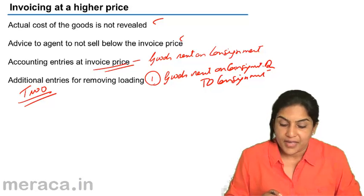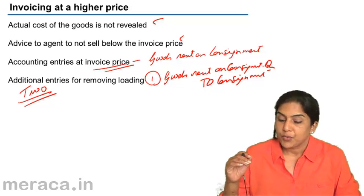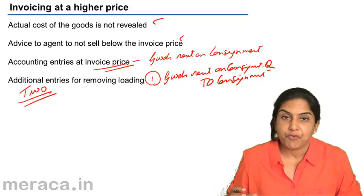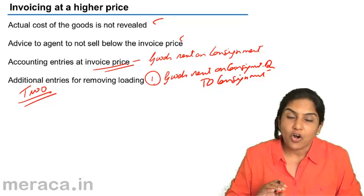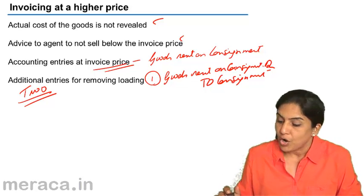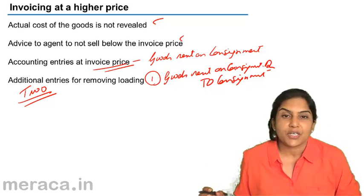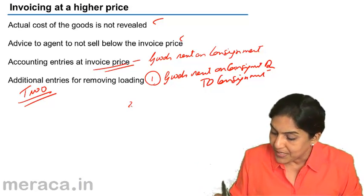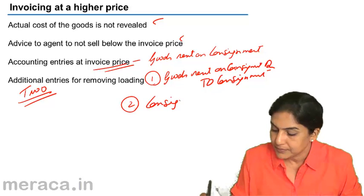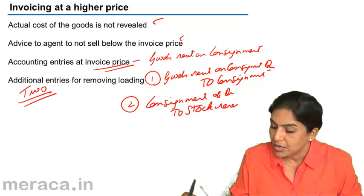However, there is closing stock, and closing stock also would have been valued at this higher cost. Therefore, it would contain an element of profit which is not yet realized. In order to remove the loading on closing stock, we pass another entry. Closing stock has come on the credit side of the consignment account at a higher value. So to reverse the effect of that, we debit consignment account and credit an account called stock reserve account.